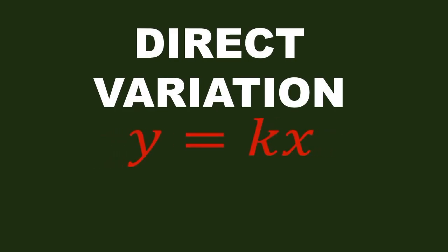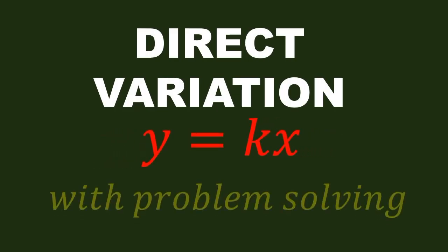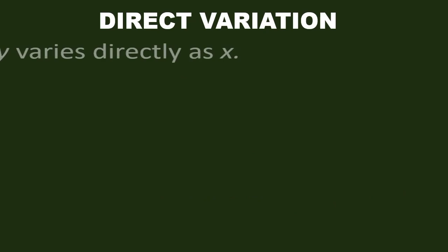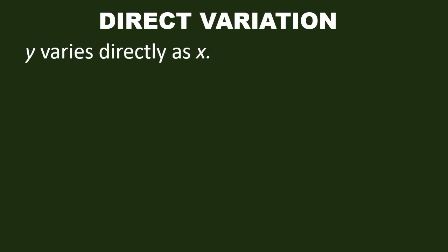The direct variation. The variable y varies directly as the variable x. In symbol, y is equal to kx, where k is the constant of variation.